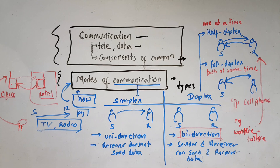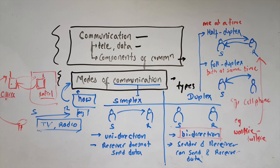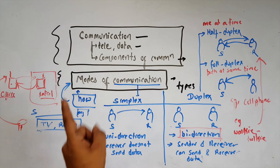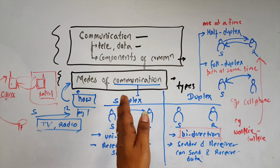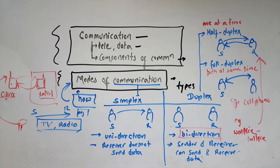Those are the three modes of communication. To summarize: simplex is unidirectional — receiver always receives, sender always sends — example: TV or radio. Duplex is bidirectional. Half-duplex is one at a time — example: walkie-talkie. Full duplex is both at the same time — example: cell phone or landline. In the next video, we will cover computer network advantages and disadvantages. See you in the next video. Stay safe. Take care. Bye-bye.